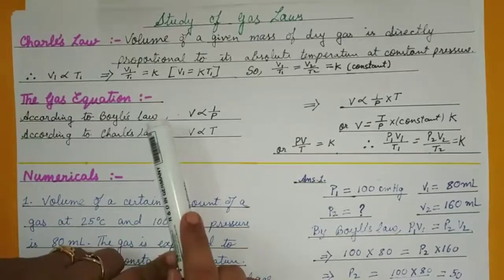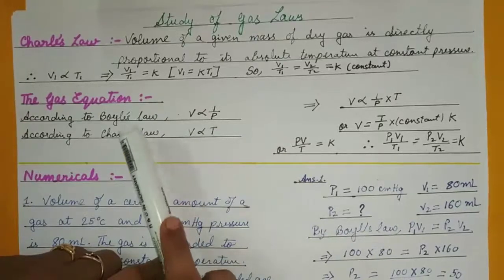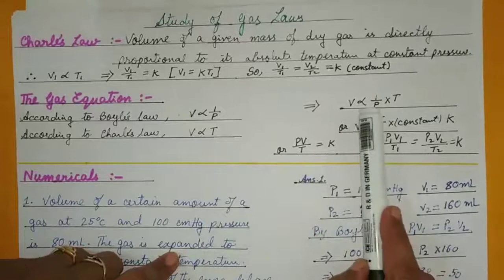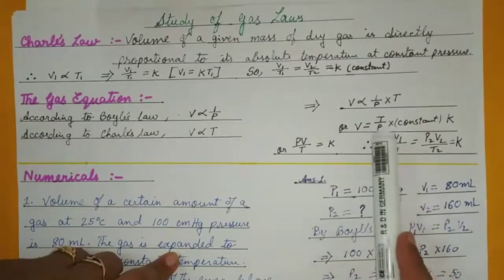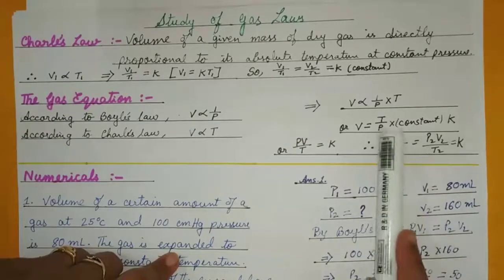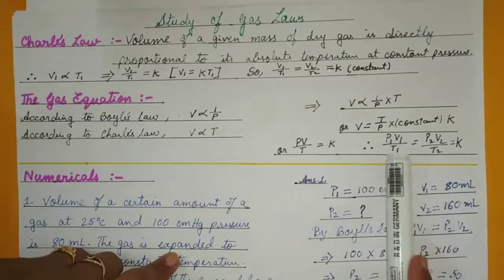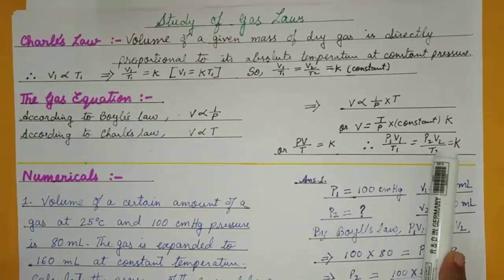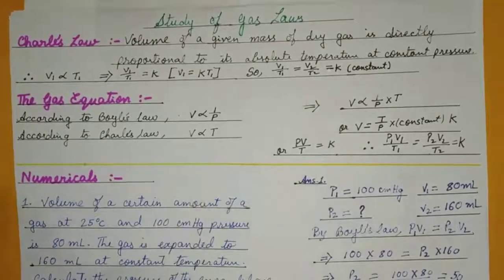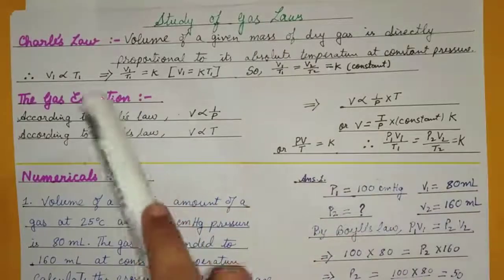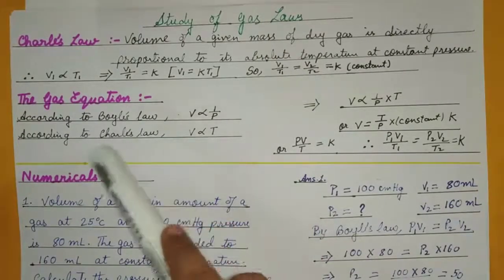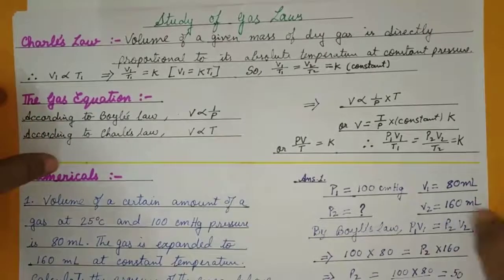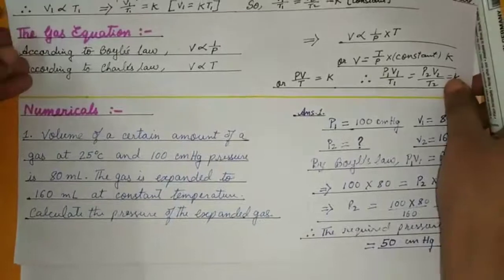When we combine Boyle's law and Charles' law, we get the gas equation. V ∝ 1/P and V ∝ T together give V ∝ T/P. Equating with a constant and rearranging gives P₁V₁/T₁ = P₂V₂/T₂, which is the gas equation. These are the key concepts: behavior of a gas, Boyle's law, Charles' law, their mathematical derivations, and the gas equation, plus the graphical representation of Boyle's law.